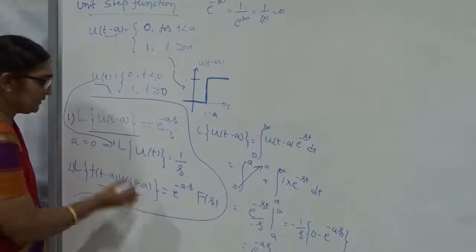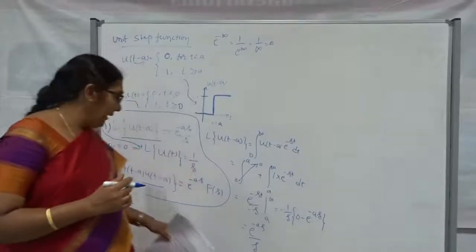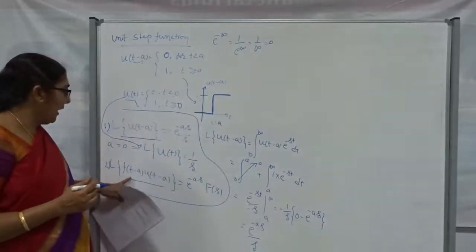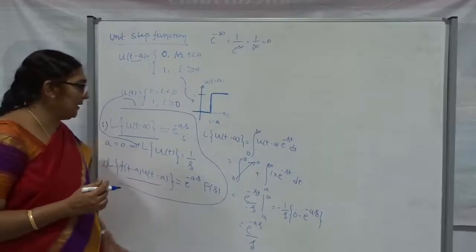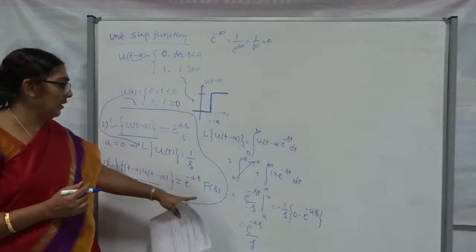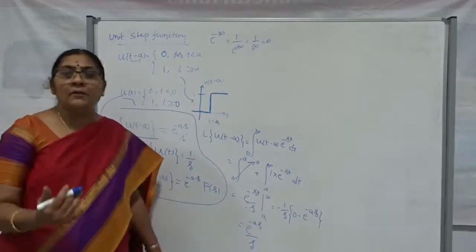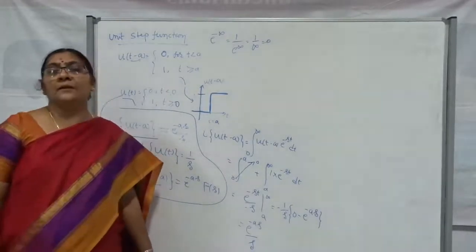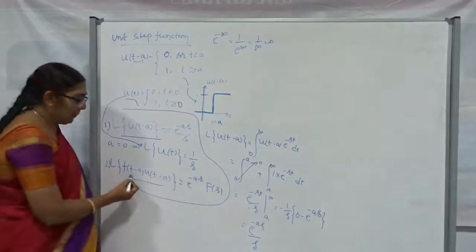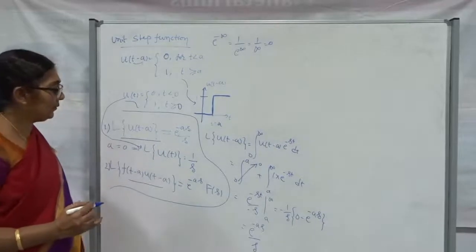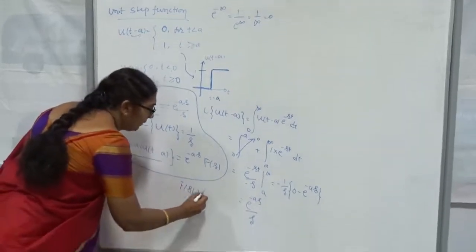Next, in some cases we express functions in terms of unit step functions. Then we use another result: the Laplace transform of F of (T minus A) into U of (T minus A) is equal to e to the power of minus AS into capital F of S. This formula is very much useful whenever you find the Laplace transform after expressing the given function in terms of the unit step function.